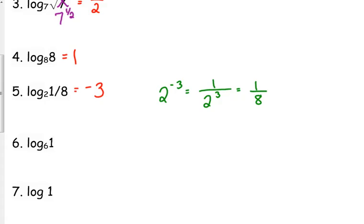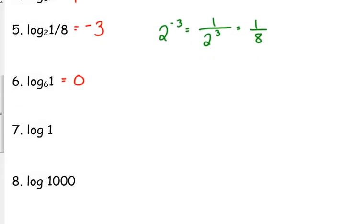Number 6. Log base 6 of 1. 6 to what power is 1? 0. I mentioned this when we were talking about the graphs. It does not matter what your base is. If you're taking the log of 1, the answer is always going to be 0. So that means number 7 is also 0. Log of 1. 10 to the 0 power is 1.